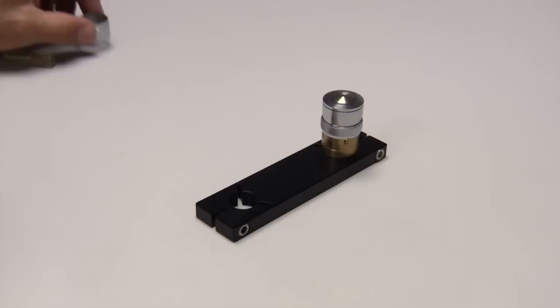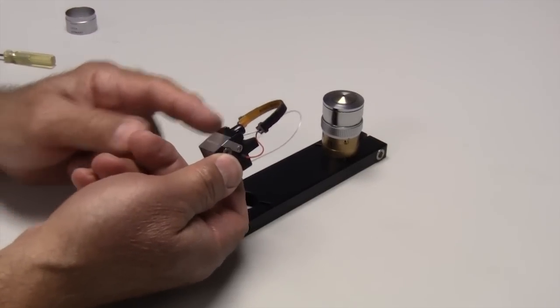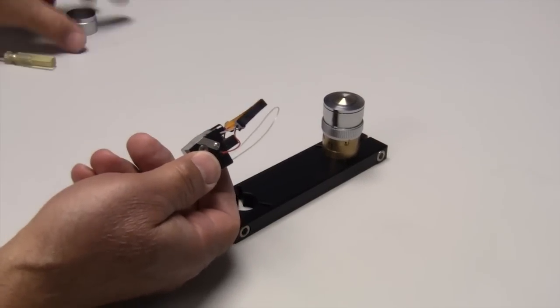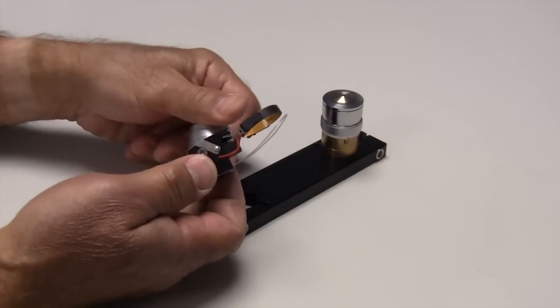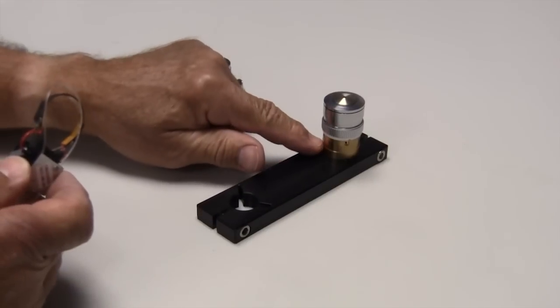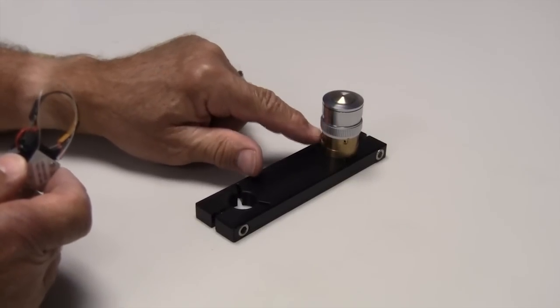Here we're going to attach a bioptics objective heater onto a Leica objective that's had the collar removed from the bottom. This was necessary to have direct contact with the brass of the objective.